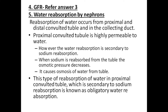The fifth question is water reabsorption by nephrons. Reabsorption of water occurs from the proximal and distal convoluted tubule and the collecting duct. The proximal convoluted tubule is highly permeable to water; however, water reabsorption is secondary to sodium reabsorption. When sodium is reabsorbed from the tubule, the osmotic pressure decreases, causing osmosis of water from the tubule. This type of water reabsorption in the proximal convoluted tubule, secondary to sodium reabsorption, is called obligatory water reabsorption.